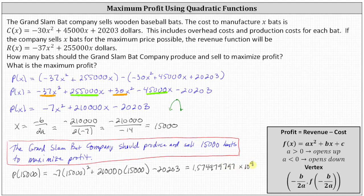To convert to decimal notation, we move the decimal point nine places to the right, which indicates the maximum profit is $1,574,979,797.